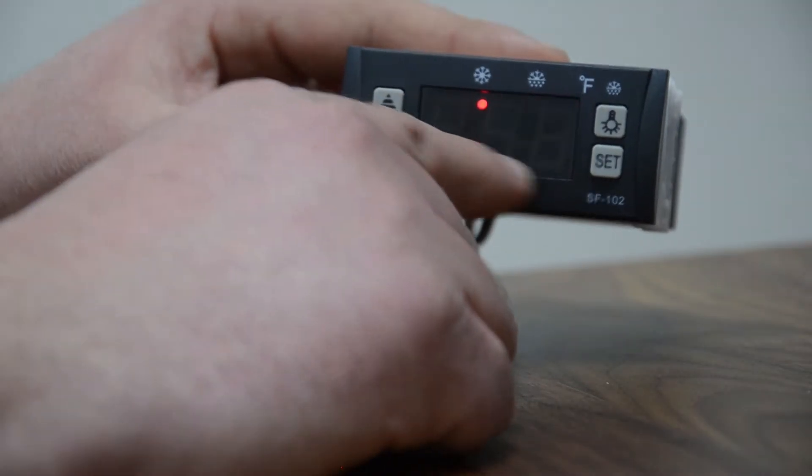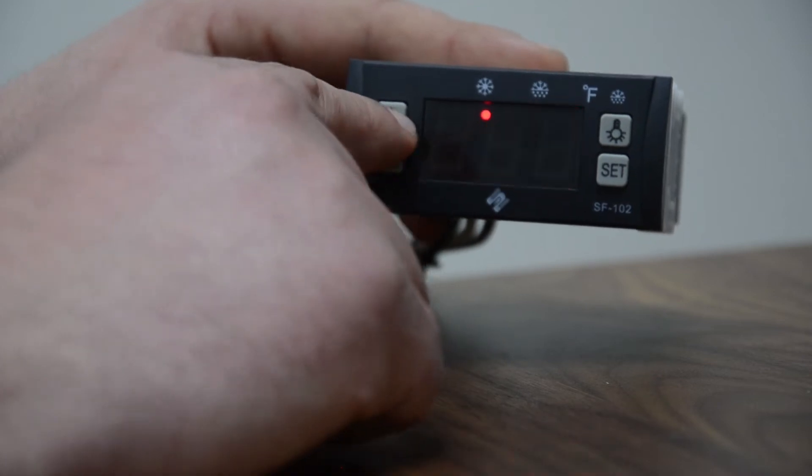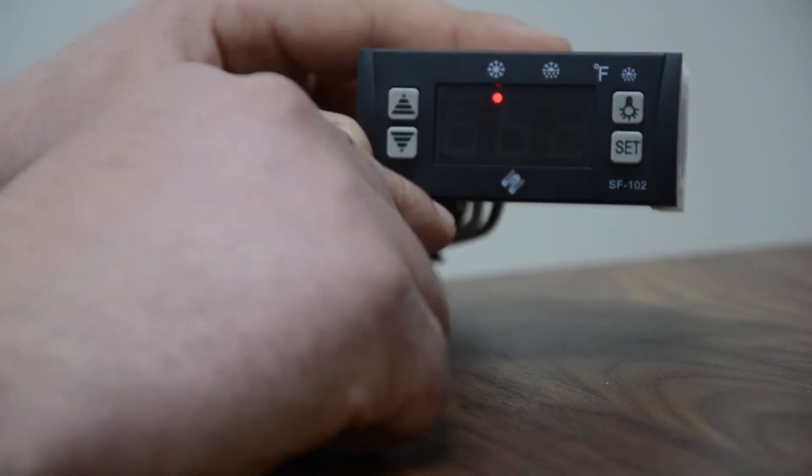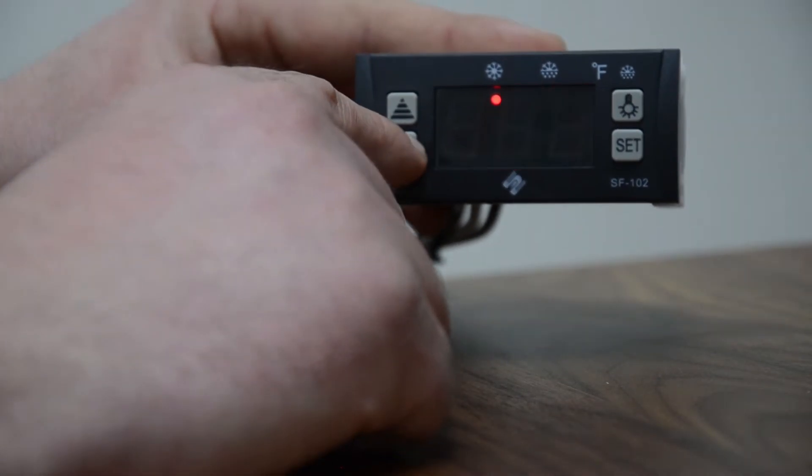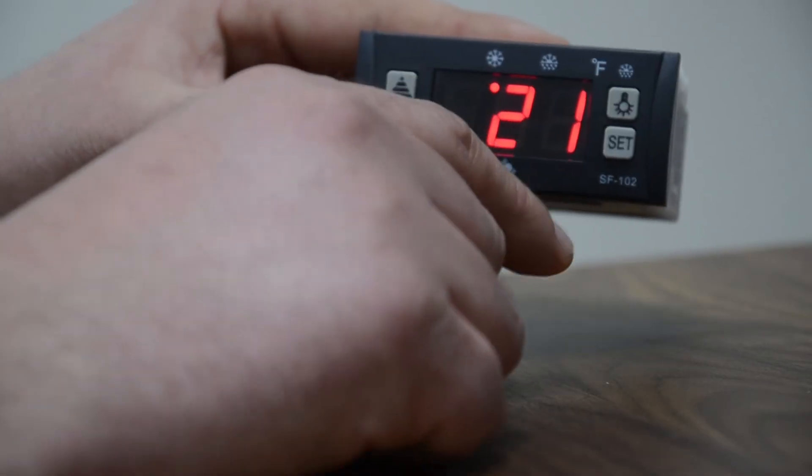Press the set button and it shows zero, so that's our desired temperature. To increase it, press the up arrow. To decrease it, press the down arrow. We want it for zero, and then you would press set, and away we go.